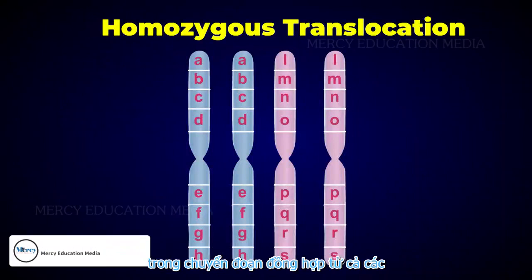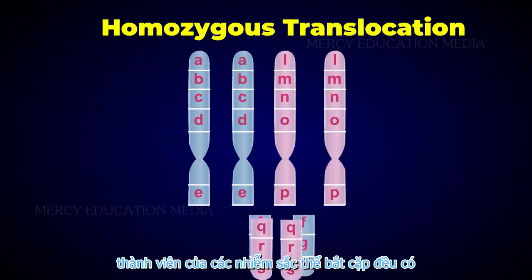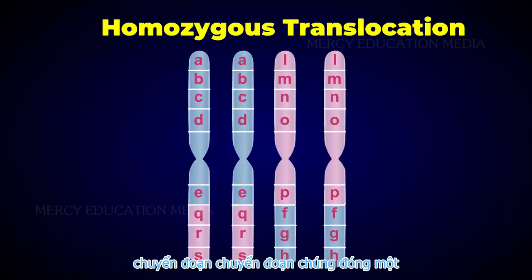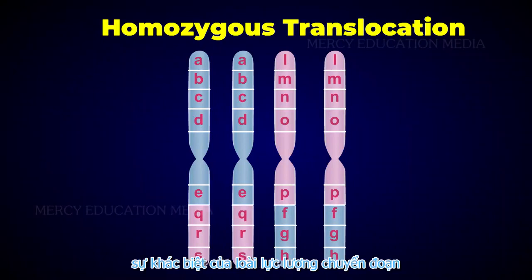In homozygous translocation, both the members of the paired chromosomes have translocated segments. They play an important role in species differentiation. Translocation causes hereditary disorders.